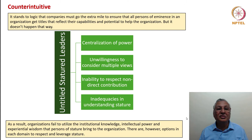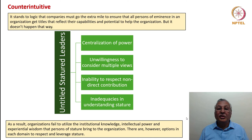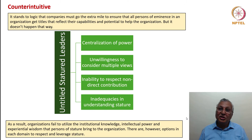It stands therefore to logic that companies must go the extra mile to ensure that all persons of eminence in an organization get titles that reflect their capabilities and potential. But why doesn't it always happen that way? Leaders tend to centralize their power, are unwilling to consider multiple views, and have intrinsic inability to respect non-direct contribution — these are inadequacies in understanding stature. When leaders have these deficiencies, even if the organizations are fortunate to have people of stature, their sage counsel and sagacity are unfortunately not tapped enough. The institutional knowledge, intellectual power, and experiential wisdom that persons of stature bring must be protected, preserved, nurtured, and leveraged.